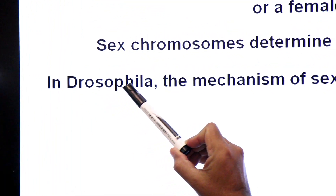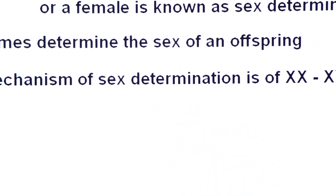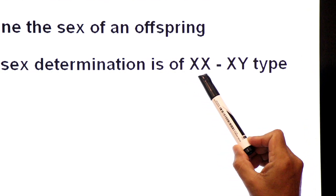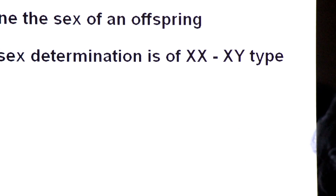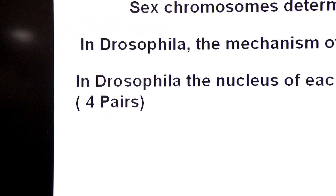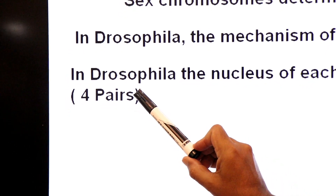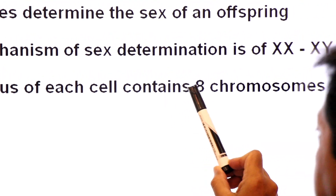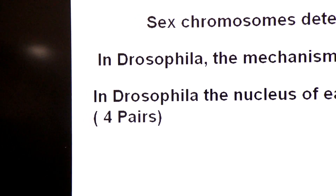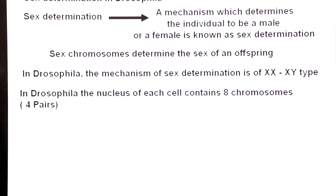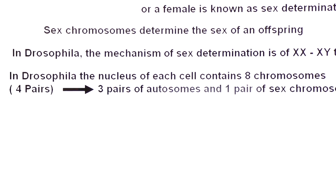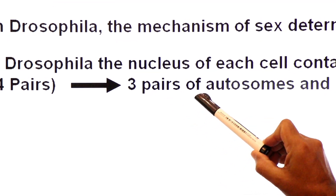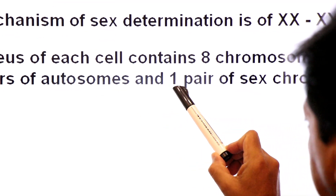In Drosophila, the mechanism of sex determination is of XX and XY type. The nucleus of each cell contains 8 chromosomes in number and 4 pairs. Drosophila ke diploid cells mein 4 pairs chromosomes paye jate hain, aur jo 4 pairs hain unmein 3 pairs of autosomes hote hain and one pair of sex chromosomes.